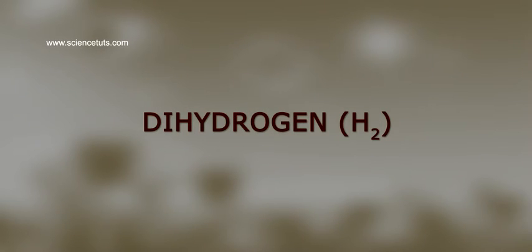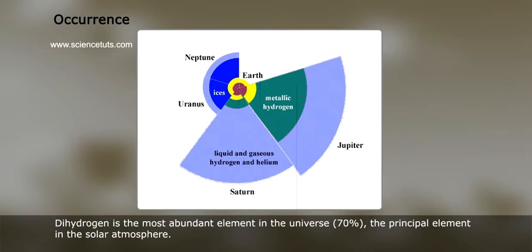Dihydrogen, H₂. Occurrences: Dihydrogen is the most abundant element in the universe (70%), the principal element in the solar atmosphere.